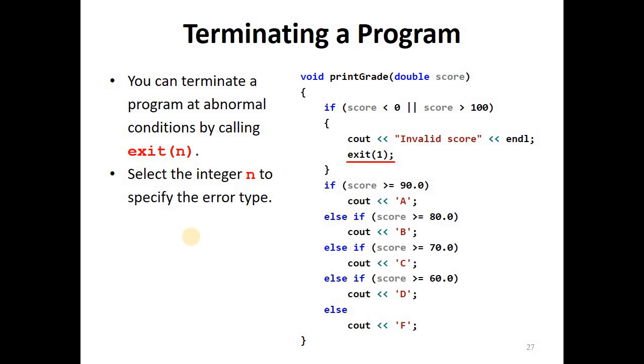C++ has a way to terminate the program from within a called function. You can terminate a program at abnormal conditions by calling the exit function and the integer n is used to specify the error.